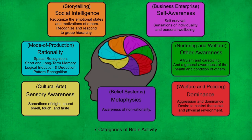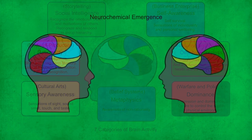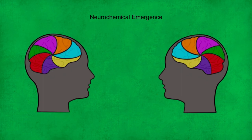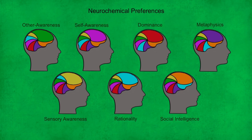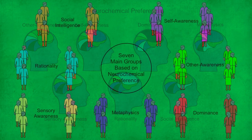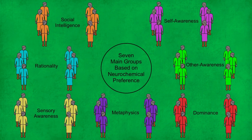How did these seven key areas of human brain activity actually manifest as the key areas of culture — a process referred to as neurochemical emergence? While every individual uses all of the neurochemical processes of their brain every day, each individual has a preference or inclination to use one particular set of neurochemical processes more than the others. For example, some people prefer to stimulate and use their rational processes, while others prefer their other awareness, and still others the sensory awareness processes of their brain. Individuals with a common neurochemical preference naturally group together in order to collectively stimulate their preferred brain area.